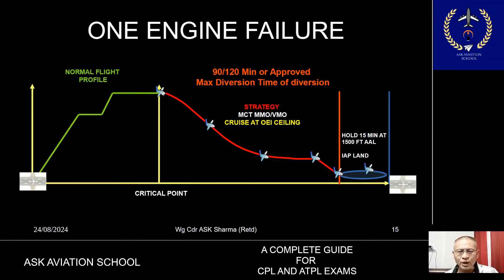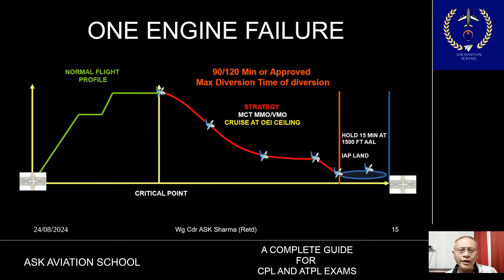From this point onward the aircraft descends with the planned speed schedule — that may be VMO, MMO, or any other speed decided by the operator — and flies for 90 minutes, 120 minutes, or any other approved maximum diversion time, after which the aircraft lands at a suitable alternate aerodrome.